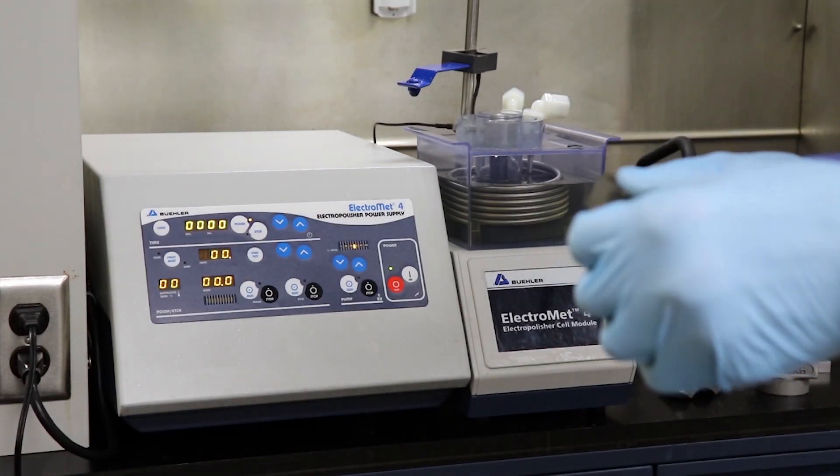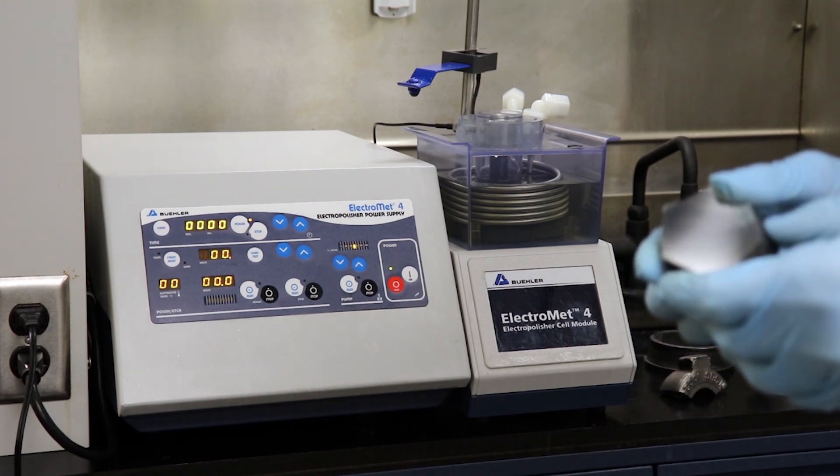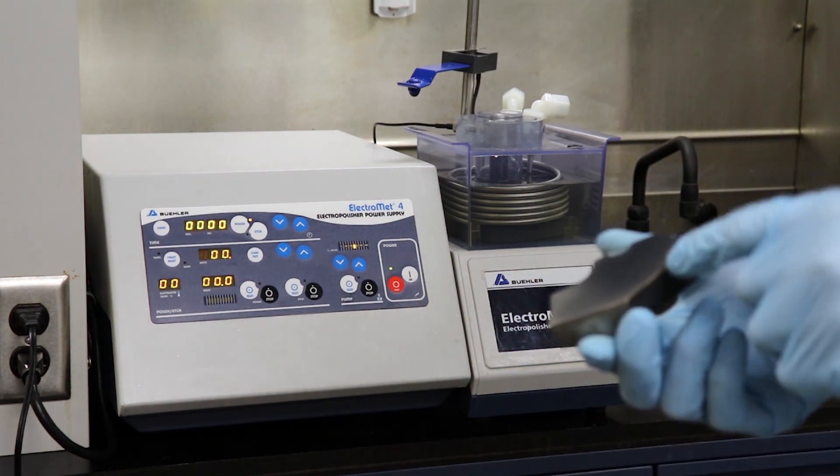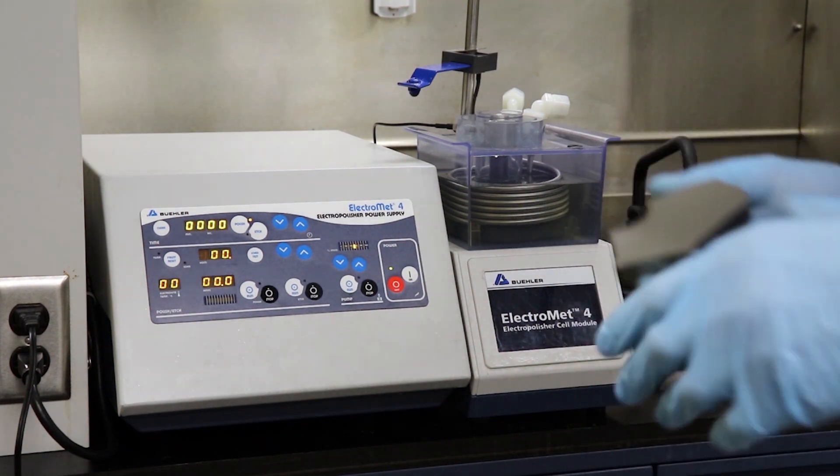We have a material sample. This is a 4130 cast steel sample that we've cut. We've ground the surface to 320 grit silicon carbide and we're ready to electropolish.